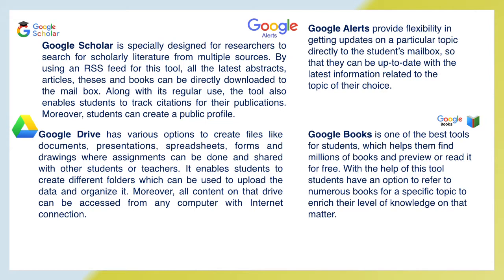Google Scholar is specially designed for researchers to search for scholarly literature from multiple sources. Using an RSS feed, the latest abstracts, articles, theses and books can be downloaded directly to a mailbox. Students can also track citations for their publications and create a public profile. Google Alerts provide flexibility in getting updates on a particular topic directly to students' mailboxes, keeping them up to date with the latest information related to their topic of choice.